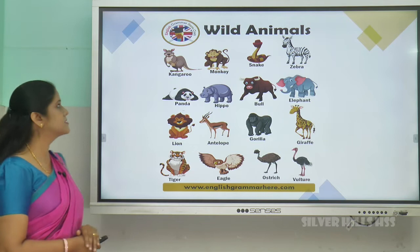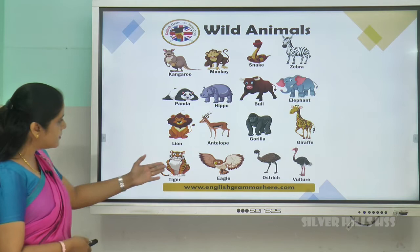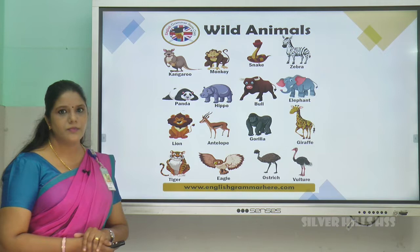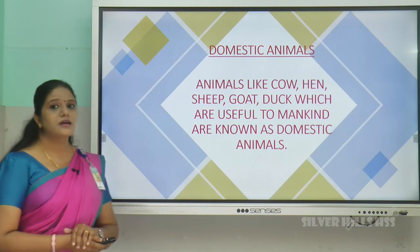These are the examples of wild animals: kangaroo, monkey, snake, zebra, panda, and some birds also — ostrich, vulture, etc. These all are examples of wild animals.